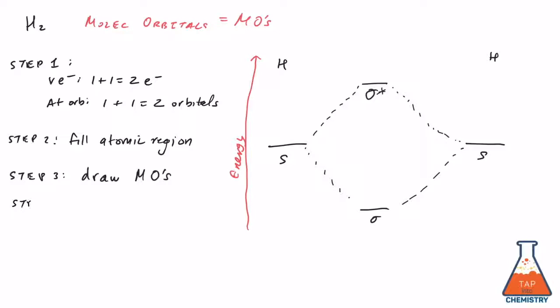Now, the last step is to fill in the electrons. We have two electrons in our atomic orbitals, so we fill in two electrons into our molecular orbitals. And that's it, folks. That's your most basic MO diagram.